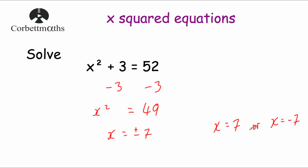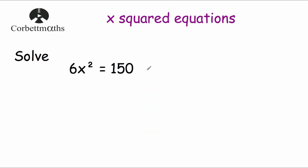Our next question says: solve 6x squared equals 150. We want to get the x on its own, so we want to get rid of the multiply by 6 and then the squared. Working in reverse BODMAS order, we get rid of the multiplication first, then the power. To remove the multiply by 6, we divide both sides by 6.